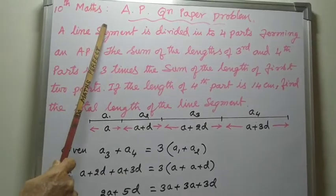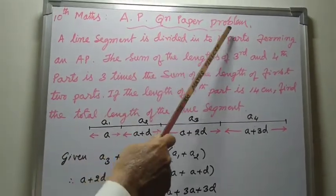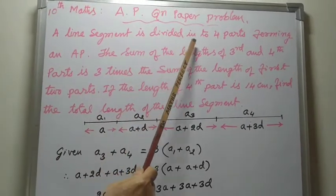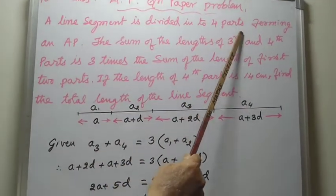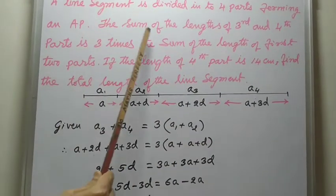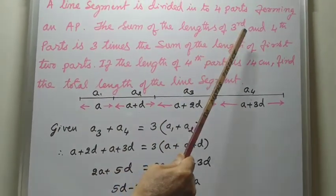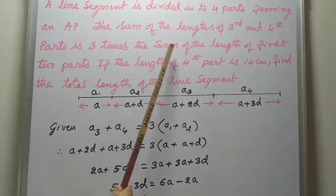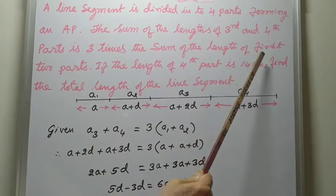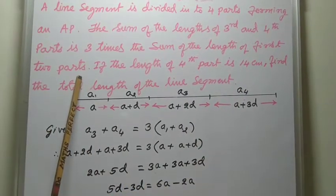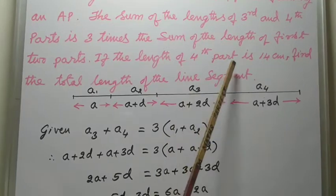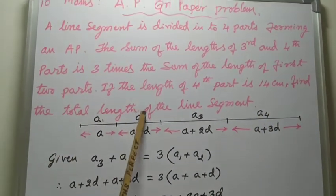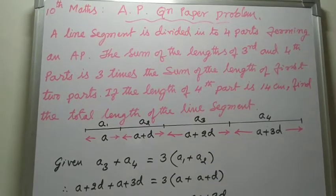Tenth Maths AP Question Paper Problem. A line segment is divided into four parts forming an AP. The sum of the lengths of the third and fourth parts is three times the sum of the lengths of the first two parts. If the length of the fourth part is 14 cm, find the total length of the line segment.